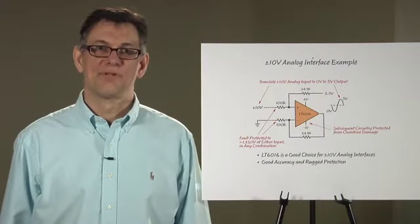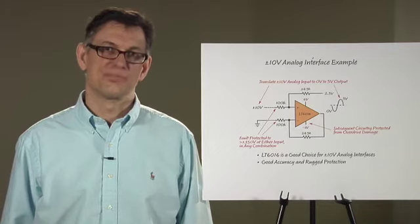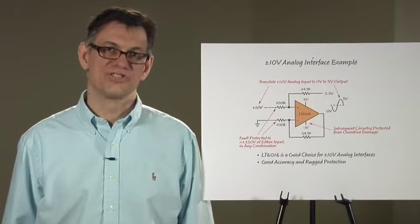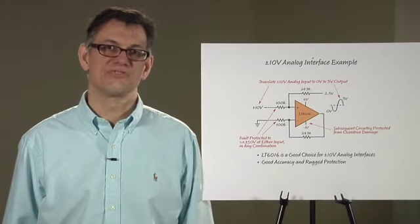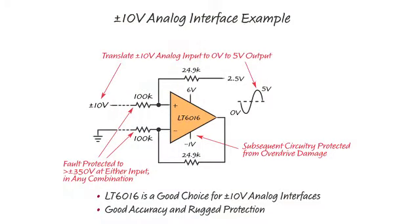The last application circuit I want to show is that of a difference amplifier designed to measure plus minus 10 volt input voltages, which is the typical output range for many industrial sensor modules. By connecting the four resistors around the LT6016 op amp as shown, you adapt the plus minus 10 volt input voltage to a low voltage output for example to be digitized by a modern ADC on a 5 volt reference.